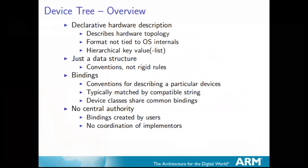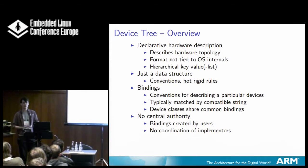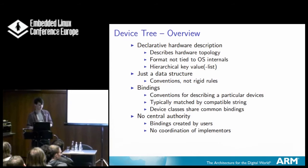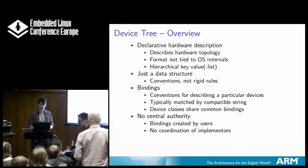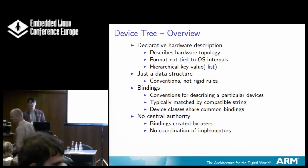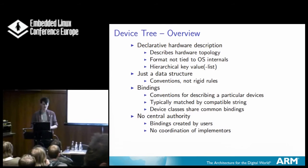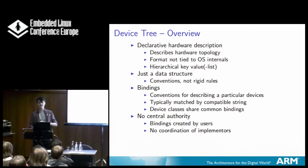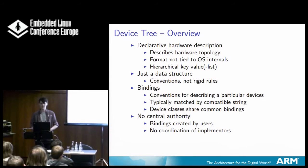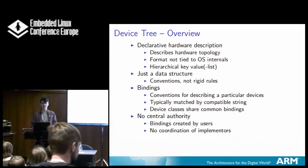Here's the less marketing-y description of Device Tree. It's a tree data structure, as the name would imply — essentially a set of key-value pairs, where each node in the tree has a set of key-value pairs, and that value may actually be a list of values in the general case. It is just a data structure. All those standards developed over the years describe how to describe things in the tree and the binary format of the tree. In general, it's conventions rather than rigid rules — we could encode the entire kernel in the device tree, and there's the flattened image tree used by U-boot, but that's not what we use in the kernel.